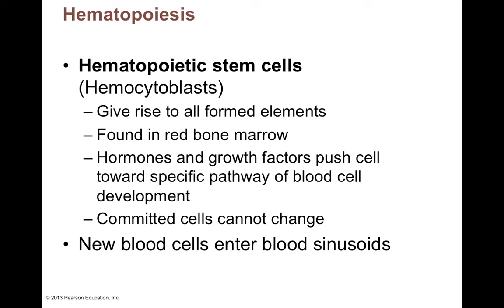In adults, red bone marrow is only found in several key areas: your sternum, the proximal epiphyses of your humerus and femur, your hip bones, your os coxae, your clavicles, your vertebrae, and your cranial bones. The rest of your long bones that aren't the proximal epiphyses of the femur and humerus will have yellow marrow, which is mostly fat.